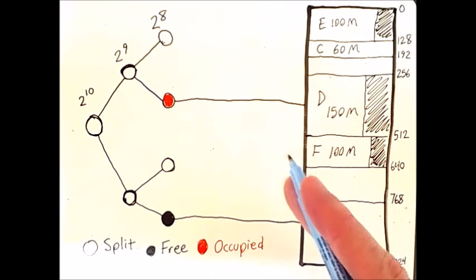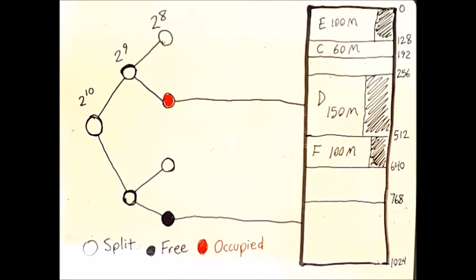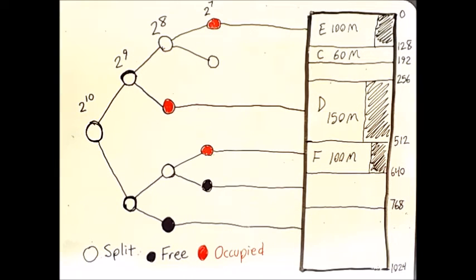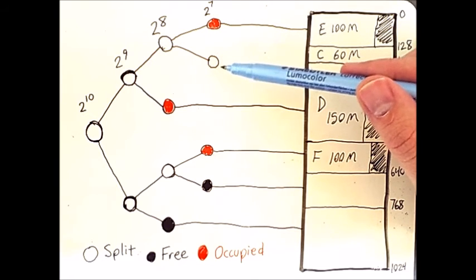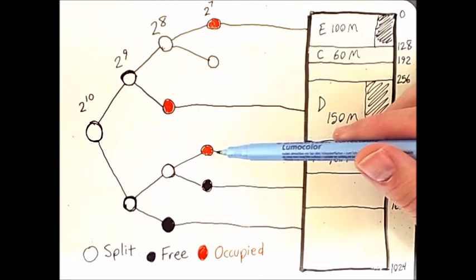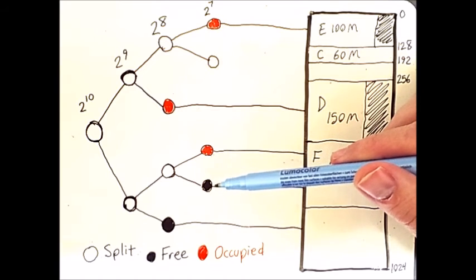Now I can go one level deeper and start splitting up memory more. The next series of splits will look like this. Here we have an occupied node, a split that we still need to fill in, another occupied node, and a free node.